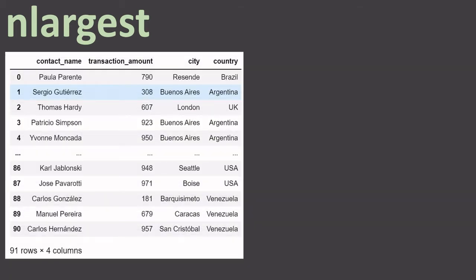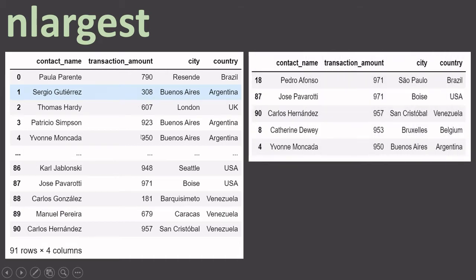The first thing we're going to learn today is nlargest. Before we proceed, let me give you an example. Here we have a data frame with 91 rows and 4 columns. We are trying to look at the transaction amount column and we need to find all the records where transaction amount is highest — for 3 records, the result should look like this. You can notice that when we filter five records, two of them have the value 971.